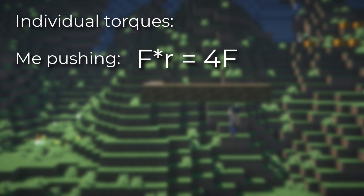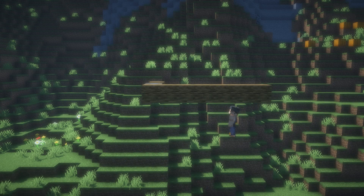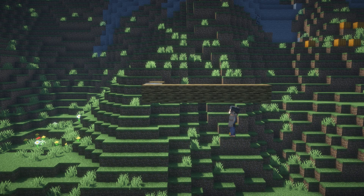Now the other force is going to be gravity — I'm pushing against gravity in this case. We know the force of gravity is mg, but what is the radius? Since gravity is always applied at the center of mass, we can assume that this uniform stick's center of mass is the center of the stick.